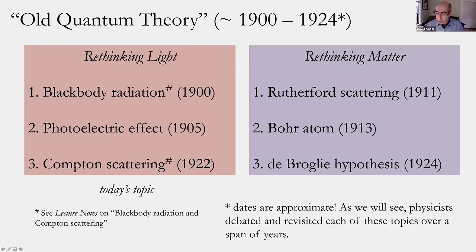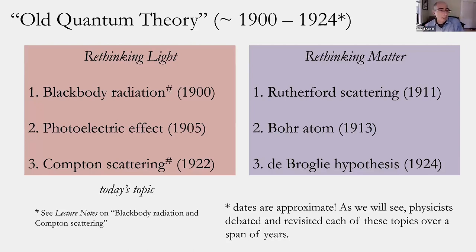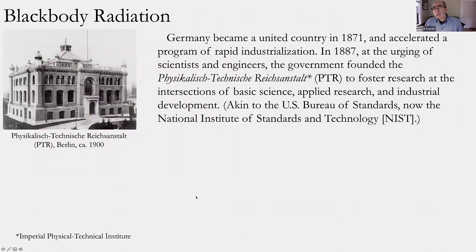Just a reminder: it's thoroughly optional, but for those interested, I did post additional lecture notes on the Canvas site. They go into more detail about parts one and three for today's material — in particular black body radiation and Compton scattering. So if some ideas go by quickly or you're unsure where a particular equation came from, there is a bit more to delve into on the course site.